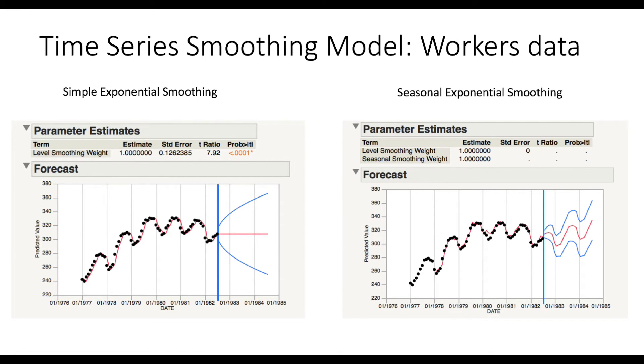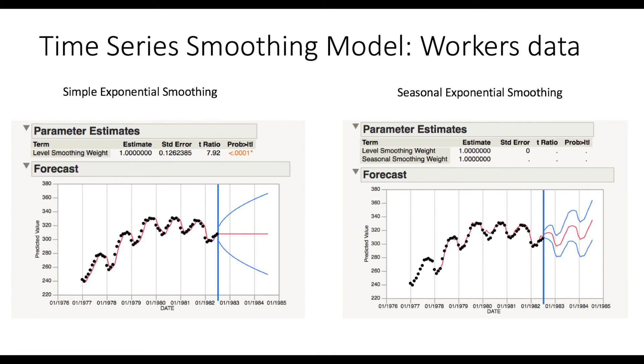Graphically, it is evident that the forecast with the seasonality transformation likely represents the data most accurately. Comparing both R-squared values, the seasonality transformation with an R-squared of approximately 0.95 is better than that of the simple exponential smoothing of 0.93.